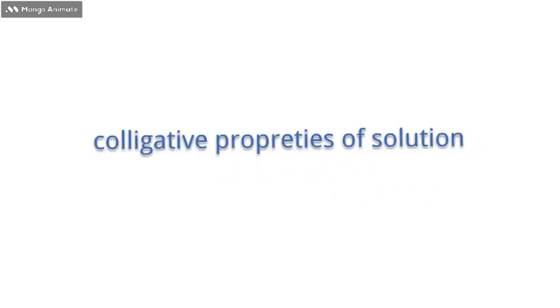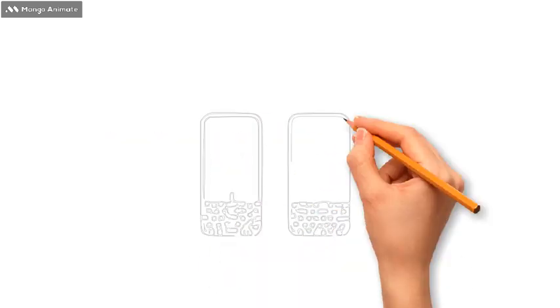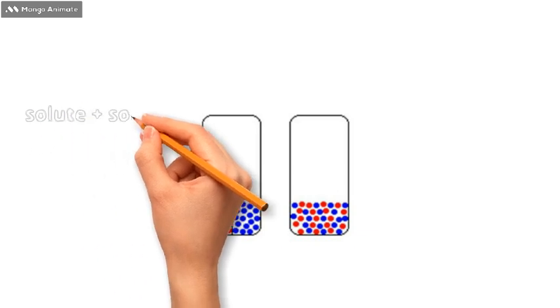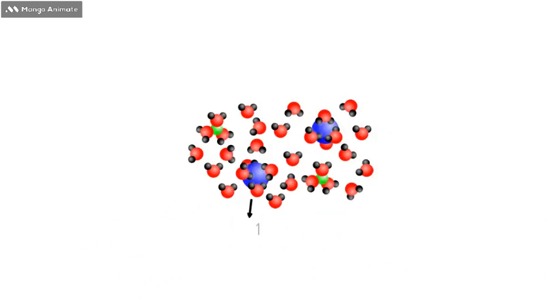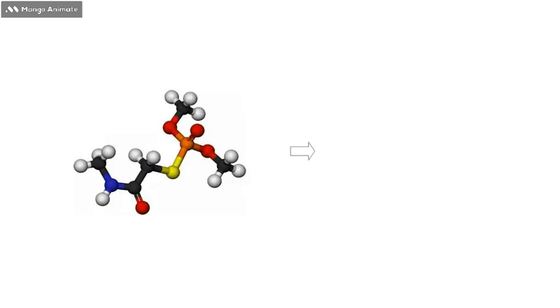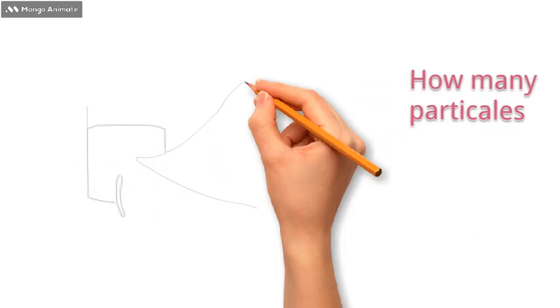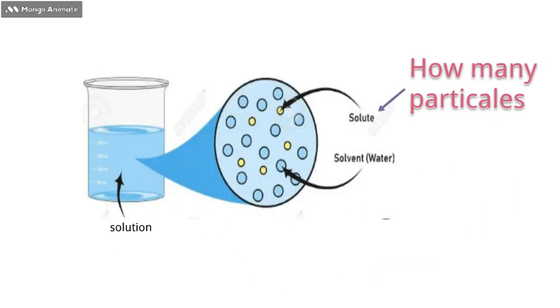Colligative properties of solution. These are properties of a solution when you mix a solute with a solvent that depend on the number of solute particles, not their identity. So it doesn't matter what the solute is made of. What matters is how many particles are floating around in the solution.